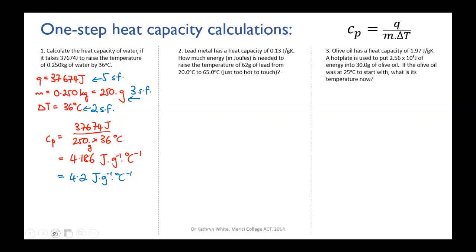Okay. Let's do the second one. We've got the lead. We're given the heat capacity of the lead. So obviously we're not going to be calculating heat capacity. We're going to be calculating something else. And then we're asked how much energy, that's Q, how much energy in joules is needed to raise the temperature of 62 grams of lead from 20 to 65 degrees Celsius, which is where it's just too hot to touch.